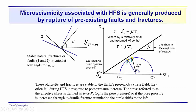We also have the intercept, which is the cohesive strength of the fractures we're trying to rupture. This is the equation for the failure envelope: shear stress equals S0 (the cohesive strength) plus the coefficient of friction times the normal stress sigma_n. The idea is that we need to increase the pore pressure. If we increase the pore pressure, we can slide the Mohr circle over so that these fractures drift over and above the failure envelope.